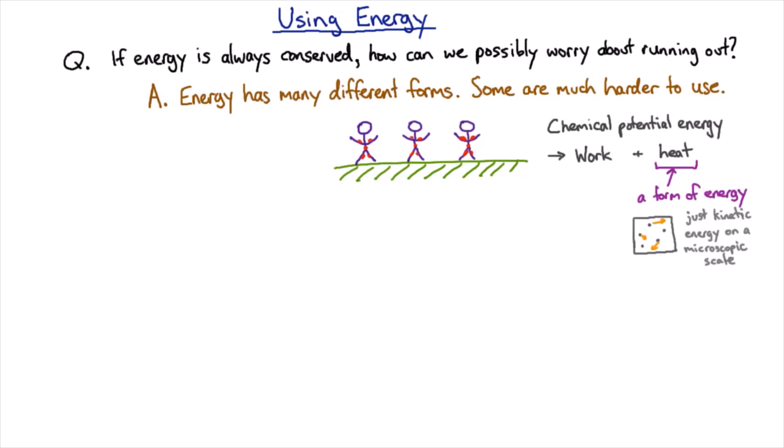So when you talk about using energy, you're really talking about transforming energy from one form to another form. Sometimes from one form to multiple other forms, of which you really only want one of them. And that means that we always have to worry about the efficiency of that process.